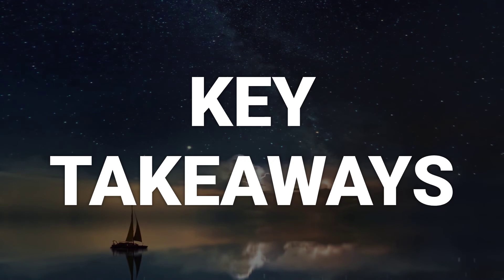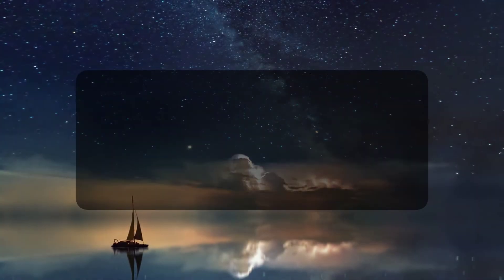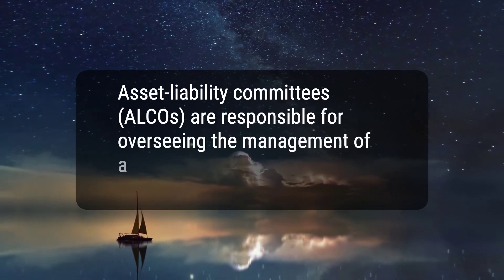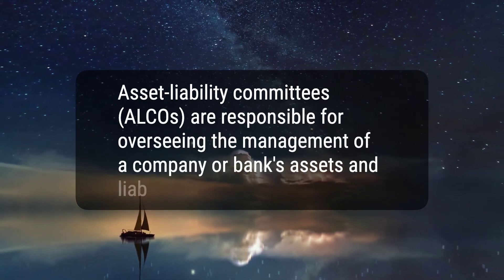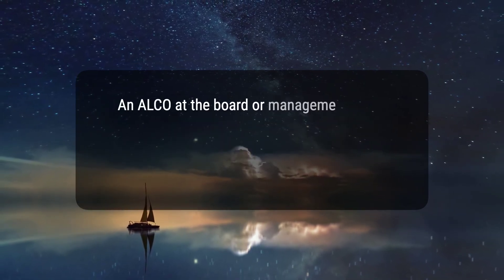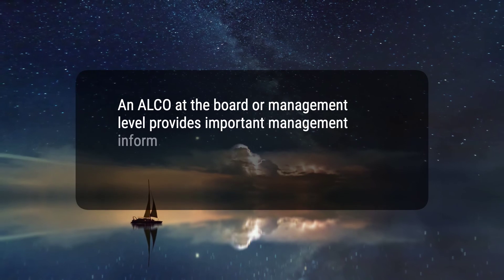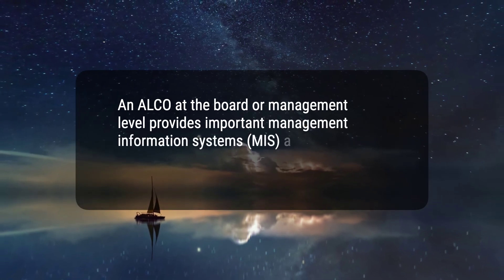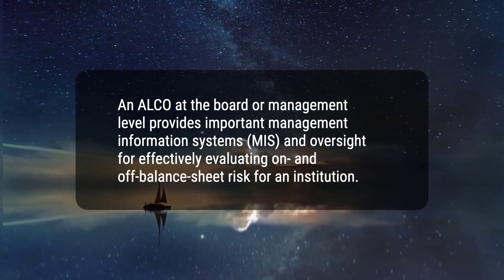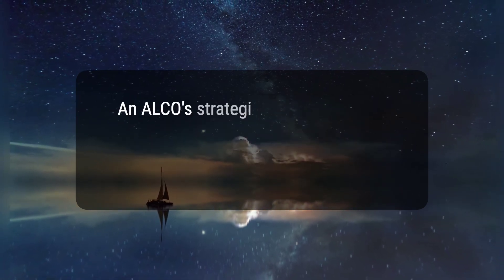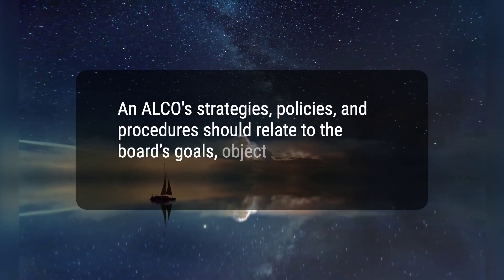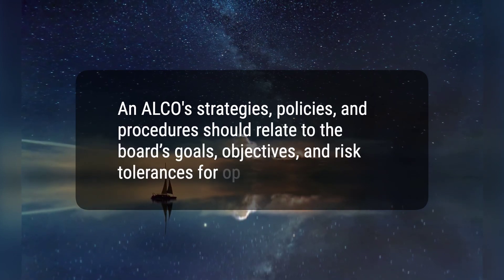Here are three key takeaways. 1. Asset Liability Committees, ALCOs, are responsible for overseeing the management of a company or bank's assets and liabilities. 2. An ALCO at the board or management level provides important management information systems, MIS, and oversight for effectively evaluating on- and off-balance sheet risk for an institution. 3. An ALCO's strategies, policies, and procedures should relate to the board's goals, objectives, and risk tolerances for operating standards.